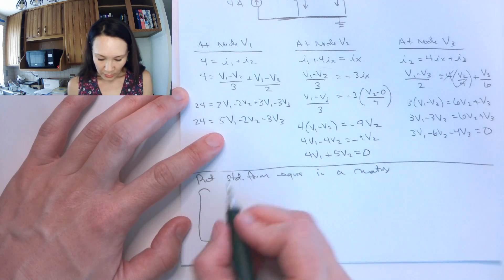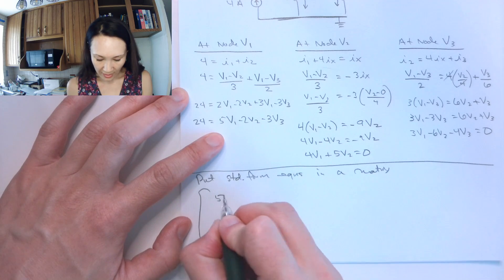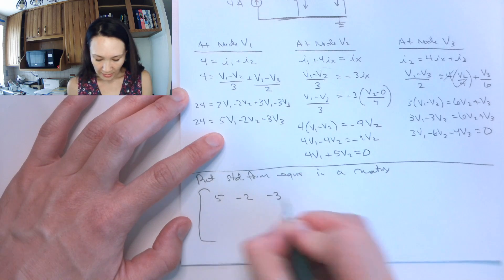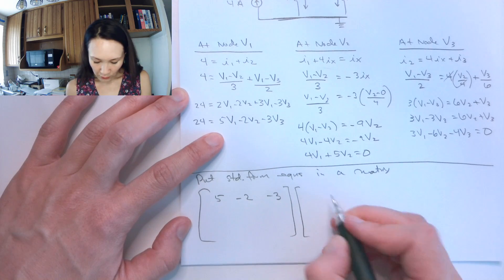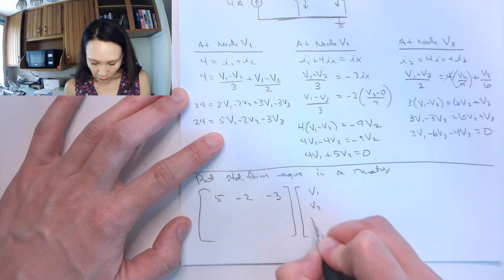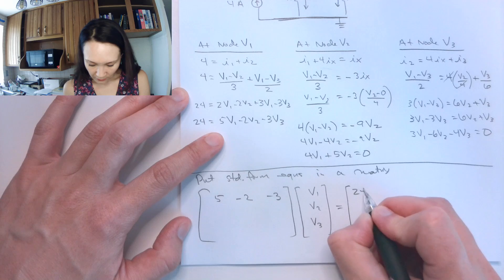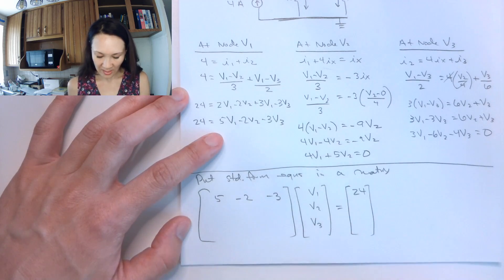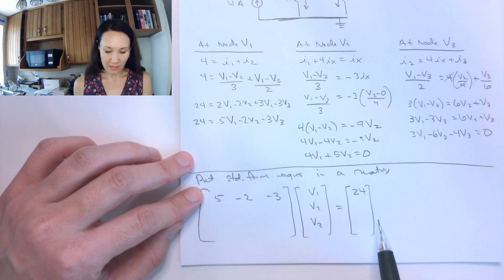The first equation, the coefficients of my V1, V2, V3 are 5, negative 2, negative 3. And then if this is multiplied by the vector V1, V2, V3, then that's going to be equal to the vector 24 in the first field. Okay, so this here, this first equation, I put into my matrix.